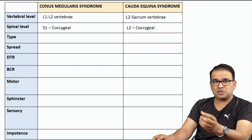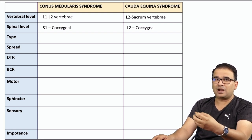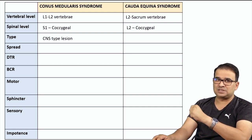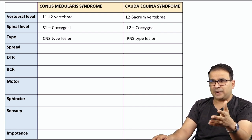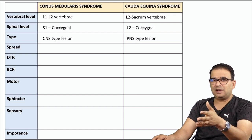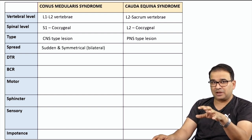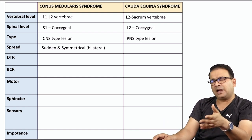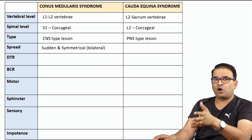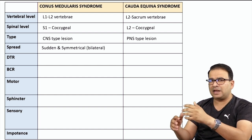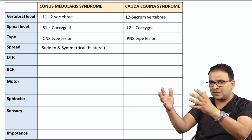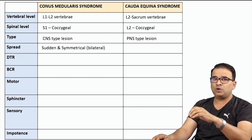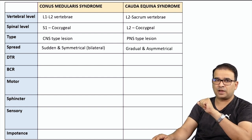Regarding the type of injury: conus medullaris injury is directly to the spinal cord, so it is a central nervous system type of lesion. Cauda equina syndrome is a peripheral nervous system type of lesion. For onset and spread: in conus medullaris, it is sudden and typically symmetrical because bilateral effects are likely with a spinal cord injury. In cauda equina syndrome, it tends to be asymmetrical because some nerves may be spared — both dorsal and ventral roots are present in the thecal sac.